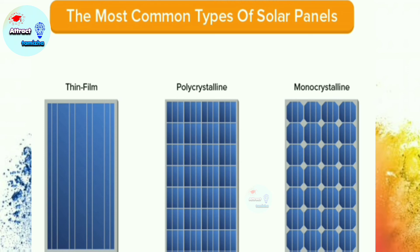Next is amorphous silicon panel, or thin film. If you look at its uniform appearance and compare the same power output, the cost is very low compared to other panels. However, it is less efficient than the other two types.